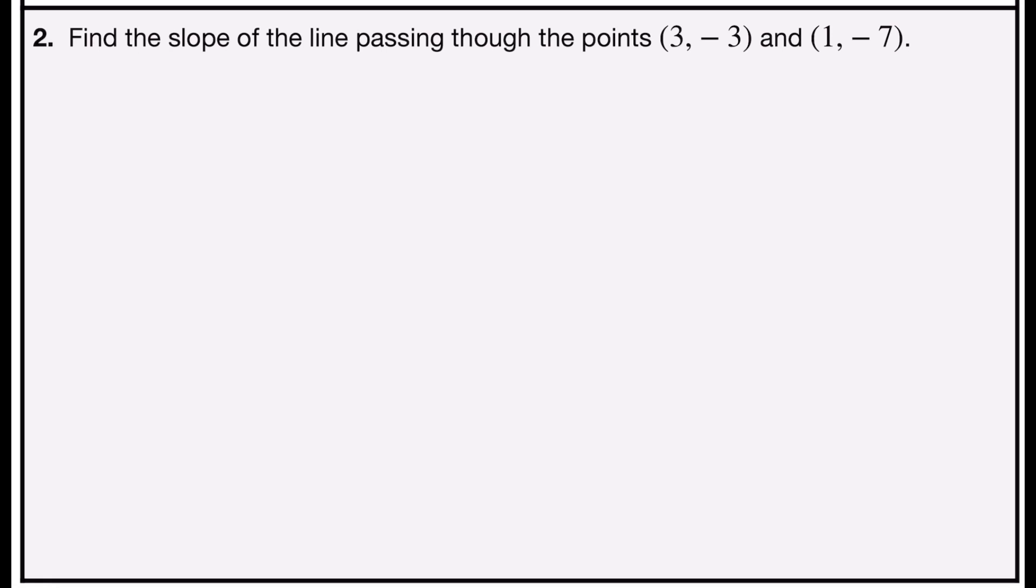Problem number two asks you to find the slope of the line passing through the points (3, -3) and (1, -7). So again, I'm going to find the ratio of vertical change to horizontal change using an algebraic formula.